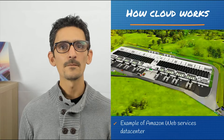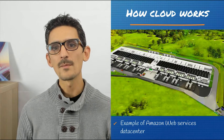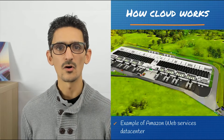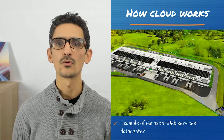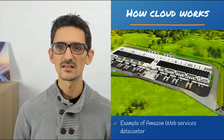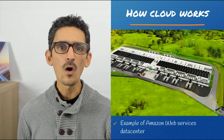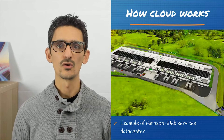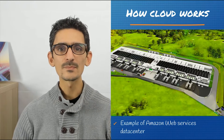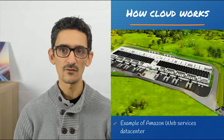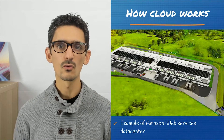Now let's see how cloud services work. For example, Amazon Web Services builds data centers all over the world with thousands of computers. When you use their services, you basically do not have one server attributed to your service. Instead, the service you buy will be dispatched across dozens of servers and even across several data centers.